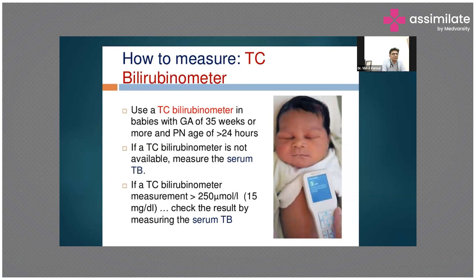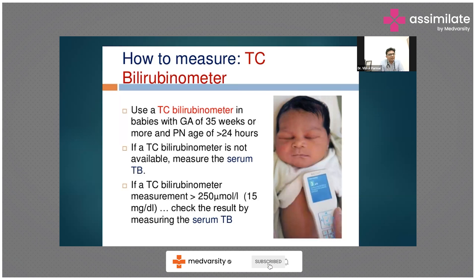Transcutaneous bilirubinometry is now increasingly used, but there are some limitations. When measuring transcutaneous bilirubin, we check it on the skin of the chest, and that skin should not have been exposed to phototherapy, because once the skin is exposed to phototherapy, its optical properties change and we might not be able to perceive the real bilirubin level. Use the transcutaneous bilirubinometer in babies with gestational age of more than 35 weeks and postnatal age of more than 24 hours.